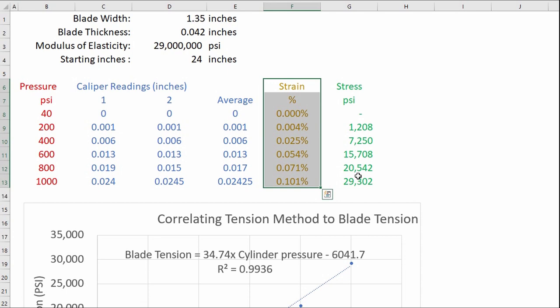I mean we could say that your blade should be at a certain percent strain and that would be a good enough value because we have to make some inferences and assumptions to get to this PSI value anyway. So the calculation...